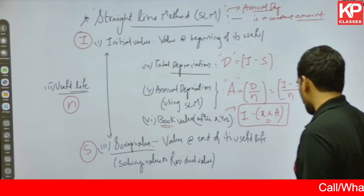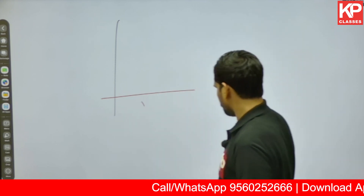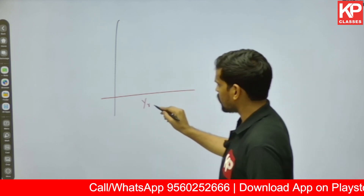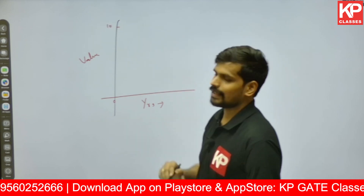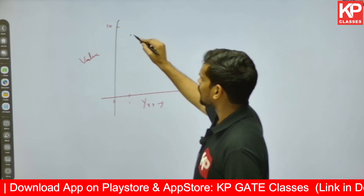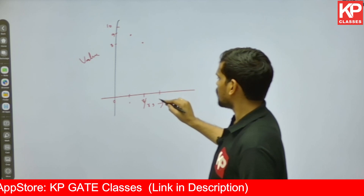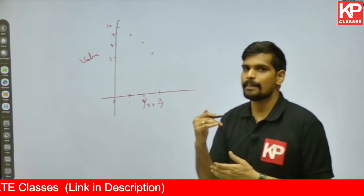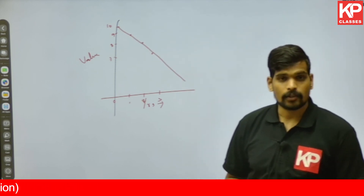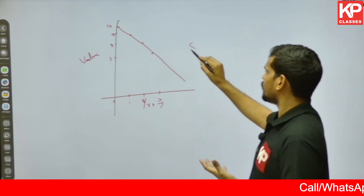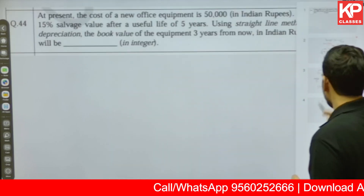Why is this method called the Straight Line Method? If you plot a graph with age in years on the x-axis and asset value on the y-axis — starting at 10 lakhs at age zero, then 9 lakhs after one year, 8 lakhs after two years, 7 lakhs after three years — since the amount of depreciation is constant every year, this graph produces a straight line with a uniform slope. That is why this method is called the Straight Line Method of depreciation.